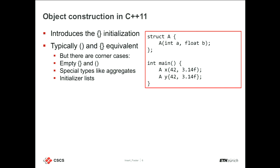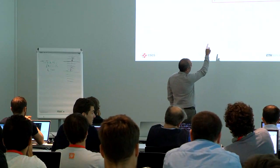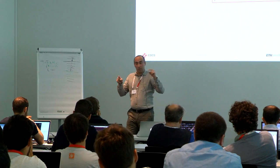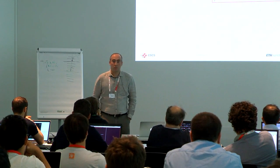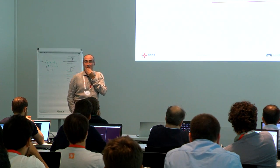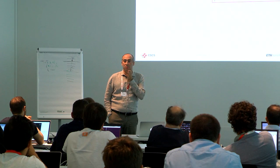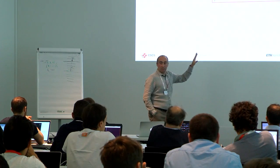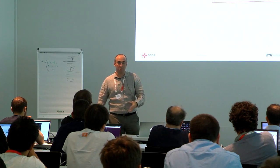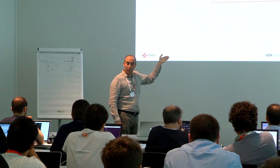If you have a struct A with a constructor that takes an integer and a float, you can create an object X with parentheses — A x(42, 3.14) — or Y with curly braces. Who knows what the difference is between these two? For this particular case, they are exactly the same behavior. You can use curly braces or round parentheses — both will just call the constructor with those two values.